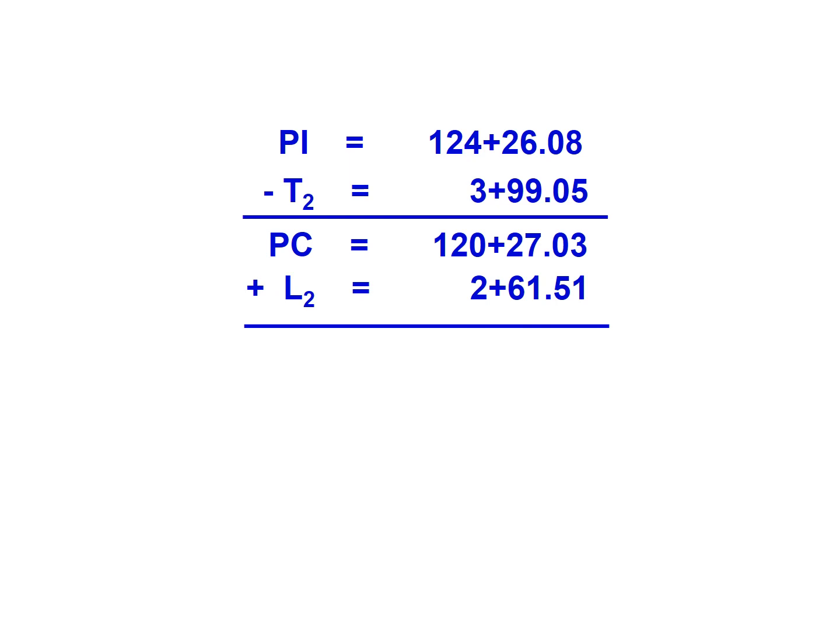We're now going to add L2—and again it's a little odd that we're adding L2 before L1, but it's because of the way the curve is arranged. That has a length of 2 plus 61.51, taking us to the point of compound curvature, which is station 122 plus 88.54.